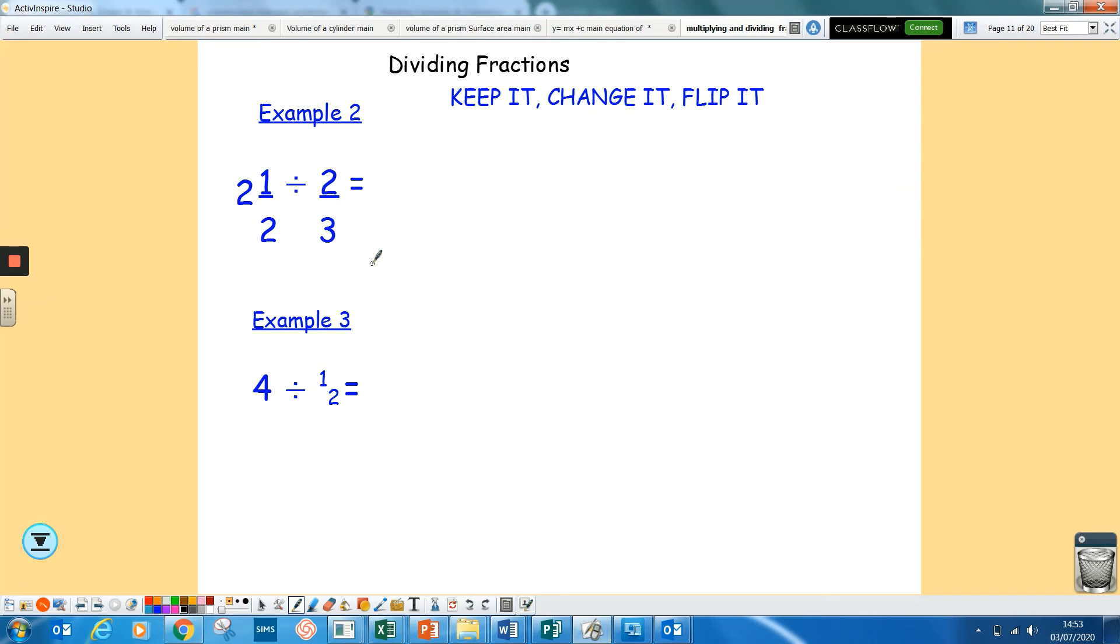Again, if you get one with mixed numbers, change that to top heavy first. So 2 times 2 is 4 plus your 1 is 5, giving 5 over 2. So again, let's just do it all: divided by 2/3. Now we can keep it, change it, flip it. So keep it the same, change it to a times, and flip it upside down. That is a 3 there, very weird looking 3. And now I've got 15 over 4, which again if I simplify that, 15s are in that which is 3 and 3 quarters left over.